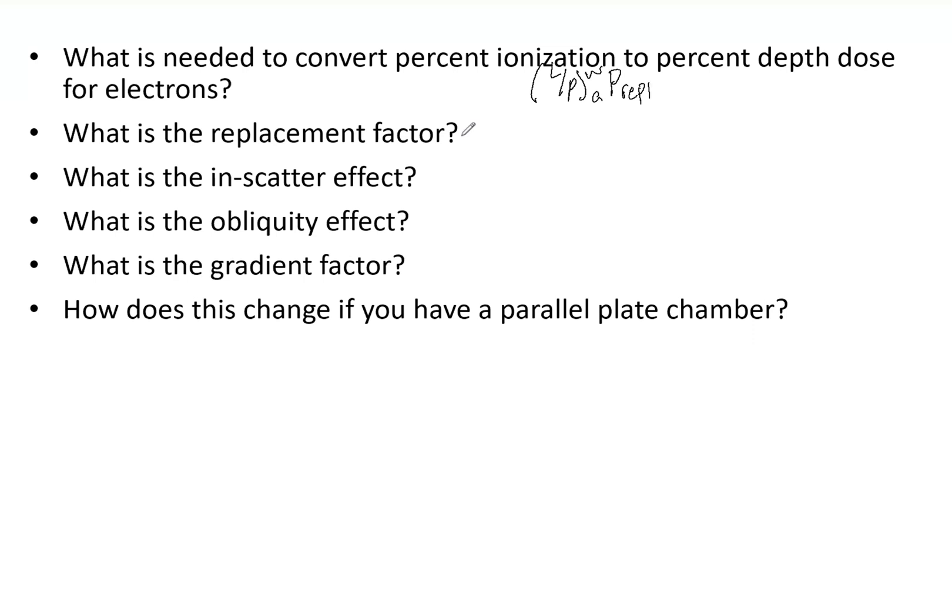Now let's dive into the three factors. What is in-scatter effect? The in-scatter increases the electron fluence in the chamber cavity because the electrons are scattering out of the air cavity, being less than expected if it were intact medium. We want full water right there where we have an ion chamber filled with air, so we have to account for that in-scatter.